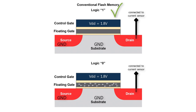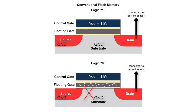The logic one cells were left in the erased state, so they don't have trapped electrons. When read, those cells allow a current to flow through the memory cell from source to drain, which is interpreted as a logic one — just as we wanted. The logic zero cells were reprogrammed using hot electron injection, so they do have trapped electrons. Those trapped electrons block the gate voltage enough to prevent current from flowing through the transistor, and that lack of current is read as a logic zero.